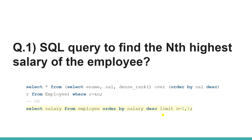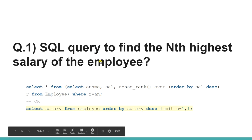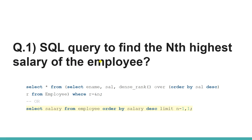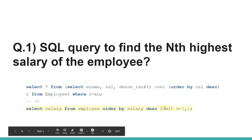The first question is finding the nth highest salary, or nth highest marks, or something like that. Put in a generic way, you have to find the nth highest row from a table based on a specific column — here the column is salary. There are multiple ways to solve this. I've listed two: one using the DENSE_RANK function and the other using the LIMIT clause.